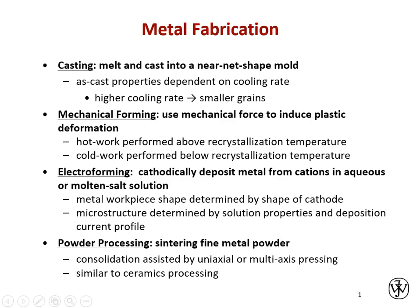We're going to start with metals and work into ceramics — three different types of ceramic processing — then polymer synthesis and a couple of methods by which thermoplastics are processed, since we covered some thermoset processing methods with composites. We'll finish up with a couple of unique methods for thermoplastic processing. Metals fabrication basically includes four different methods: casting, mechanical forming — which can be done either hot or cold, hot meaning above about half of the melting point such that we get dynamic recrystallization and recovery.